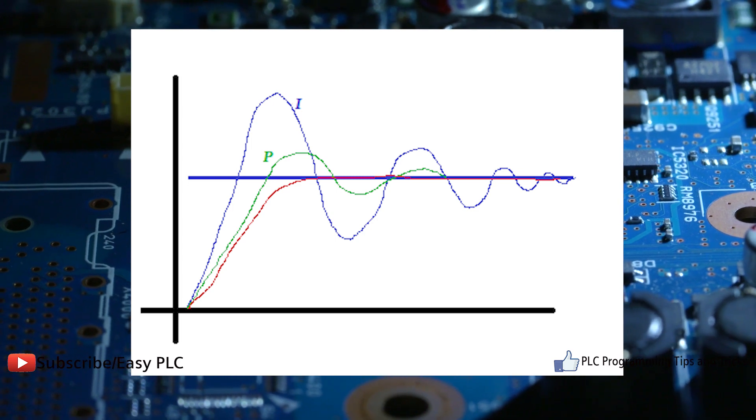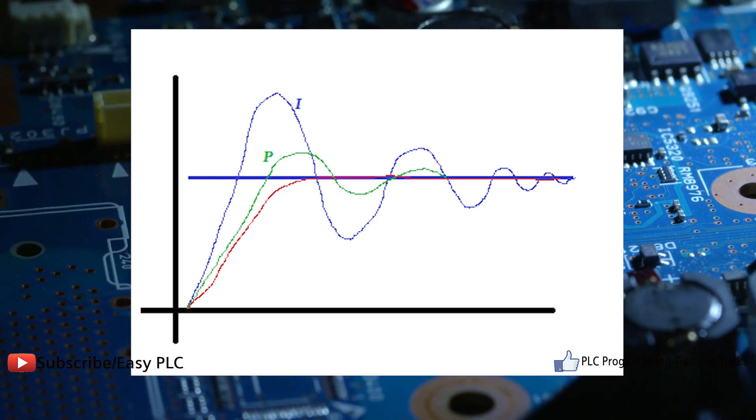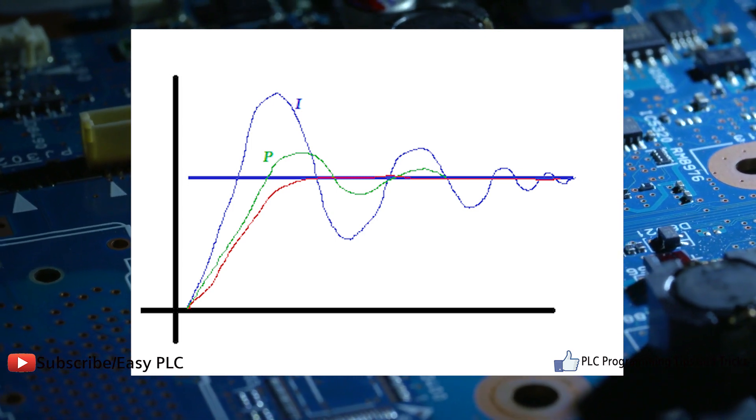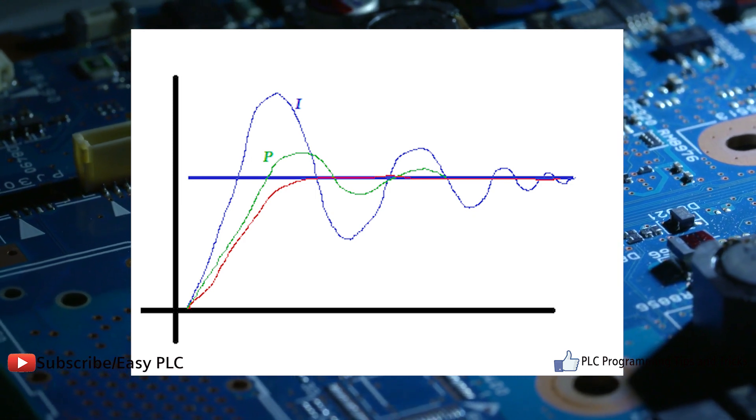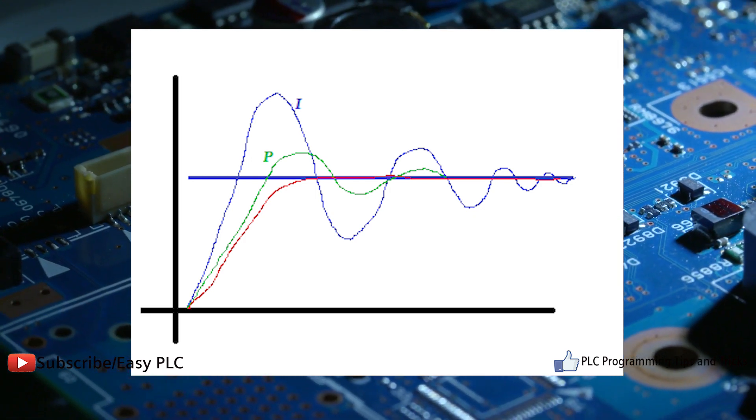PID controller maintains the output such that there is zero error between process variable and setpoint desired output by closed-loop operations.